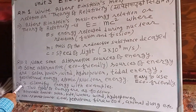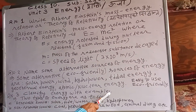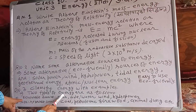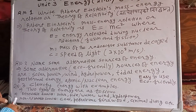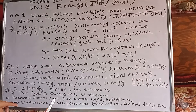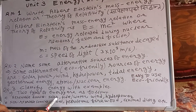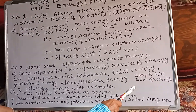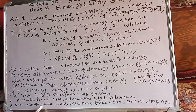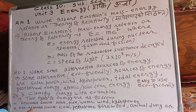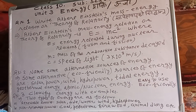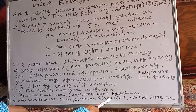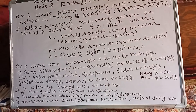Question number three: Classify energy with two examples, or how many types of energy are there? There are mainly two types of energy. Number one: renewable sources — that means you can make them again and again. Examples: solar energy, tides, water, wind, hydropower, etc. Number two: non-renewable sources, which cause pollution and take more time — millions of years — to reform. Examples: coal, petroleum, firewood, animal dung, etc., which cause pollution.